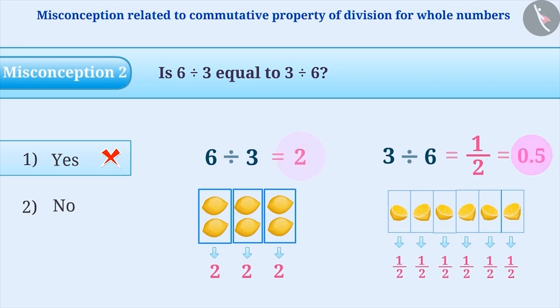Now, if we compare the results of the two, then it can be understood that the values of 6 divided by 3 and 3 divided by 6 are not equal.